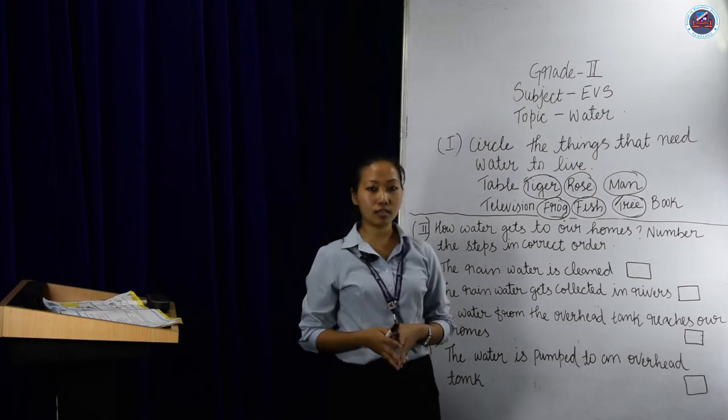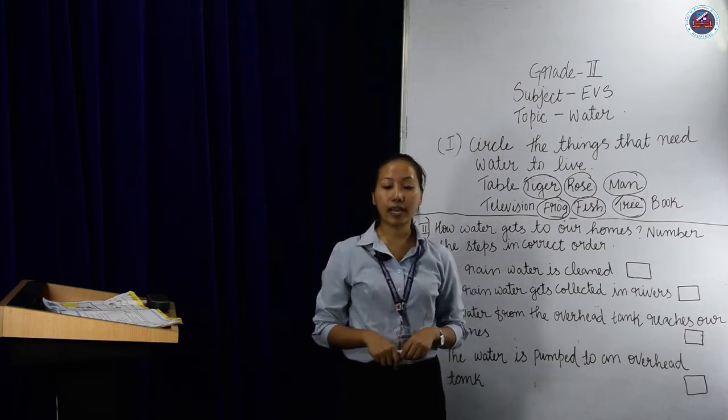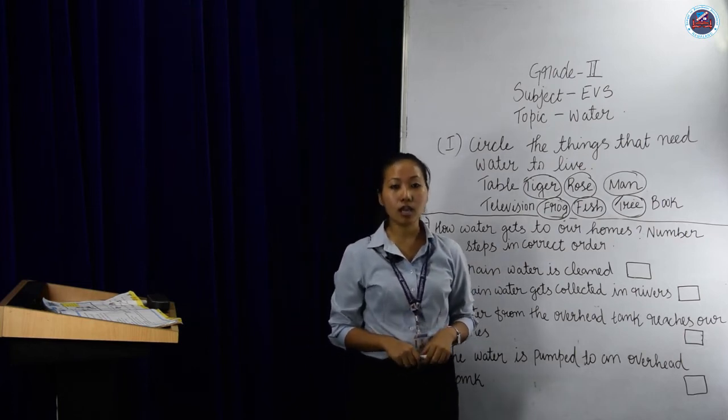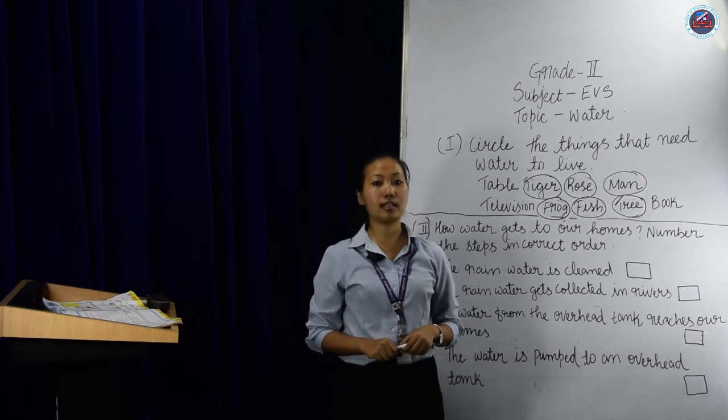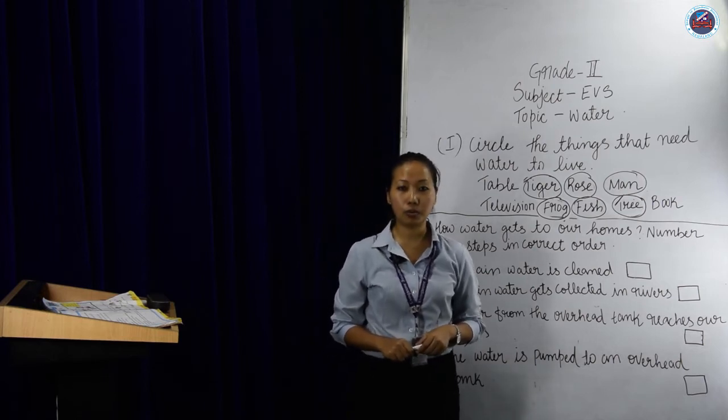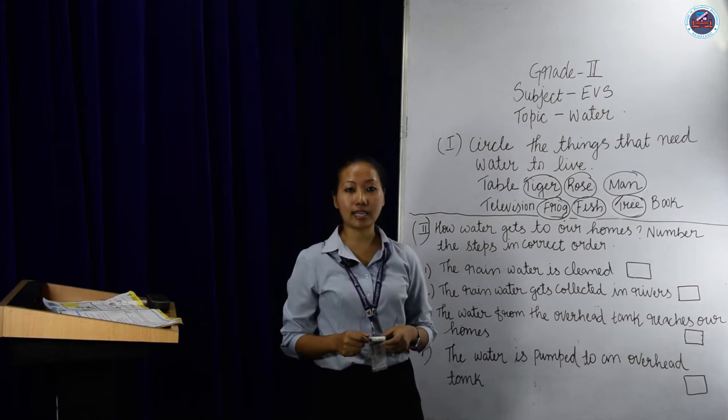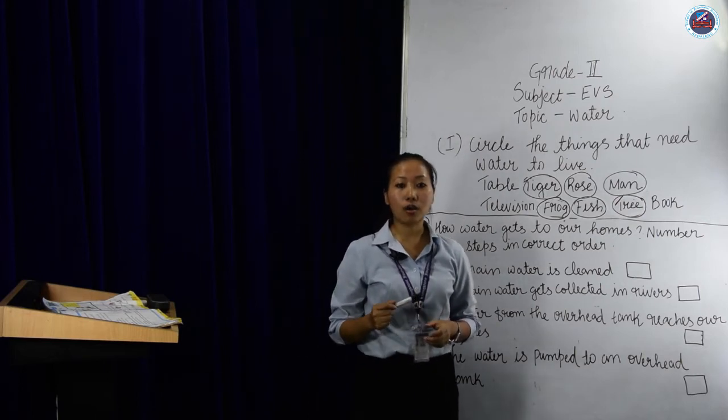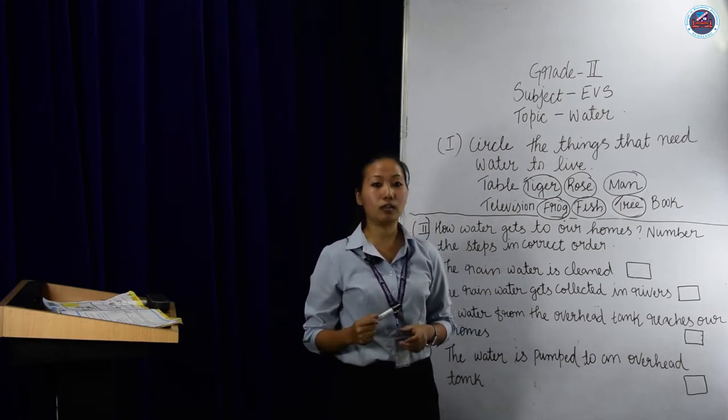The next is sources of water. Rain is the main source of water. So this rain water it gets collected in river, lakes, ponds, wells, tanks. So this is how we get the water.